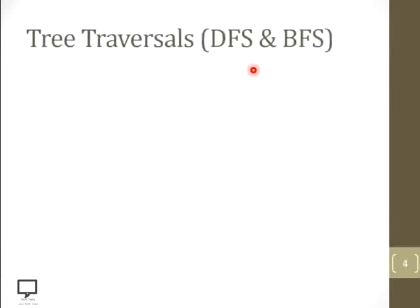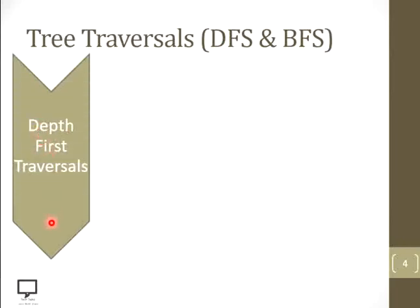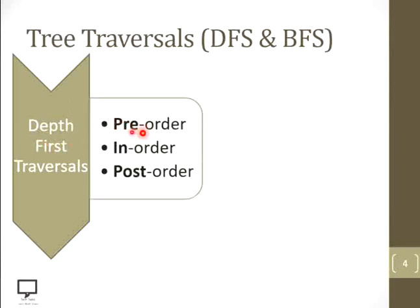Now let's see what is the meaning of tree traversal, what different tree traversal techniques are there, and how they are useful to traverse the tree. Basically there are two traversal techniques: DFS and BFS. DFS stands for depth first traversal technique and BFS stands for breadth first traversal technique. We will see different ways to traverse a tree according to depth: pre-order, in-order, and post-order traversal.